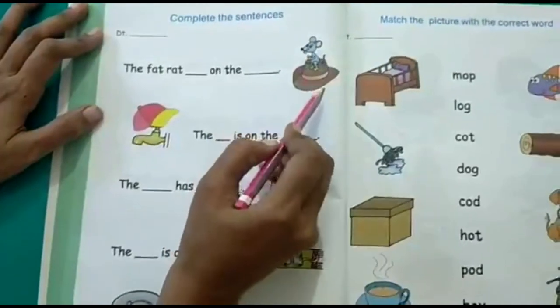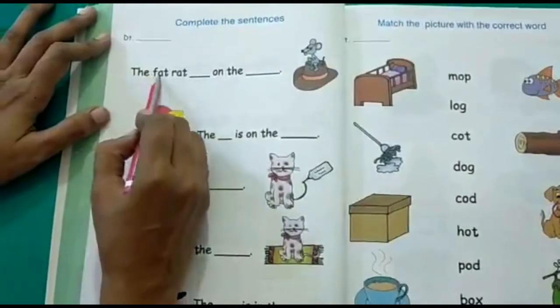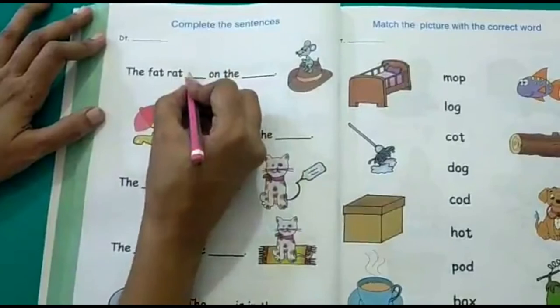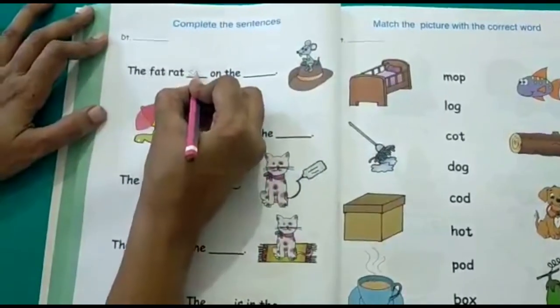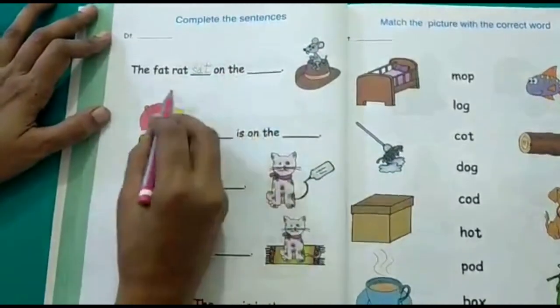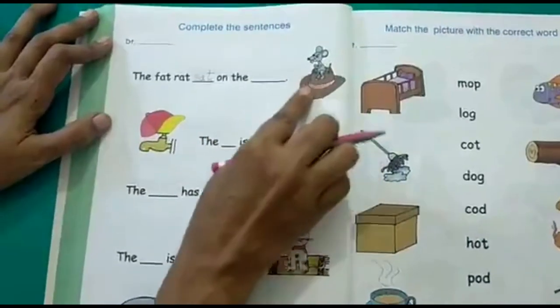The fat rat is sitting on a hat. Correct. So the fat rat sat on the hat.